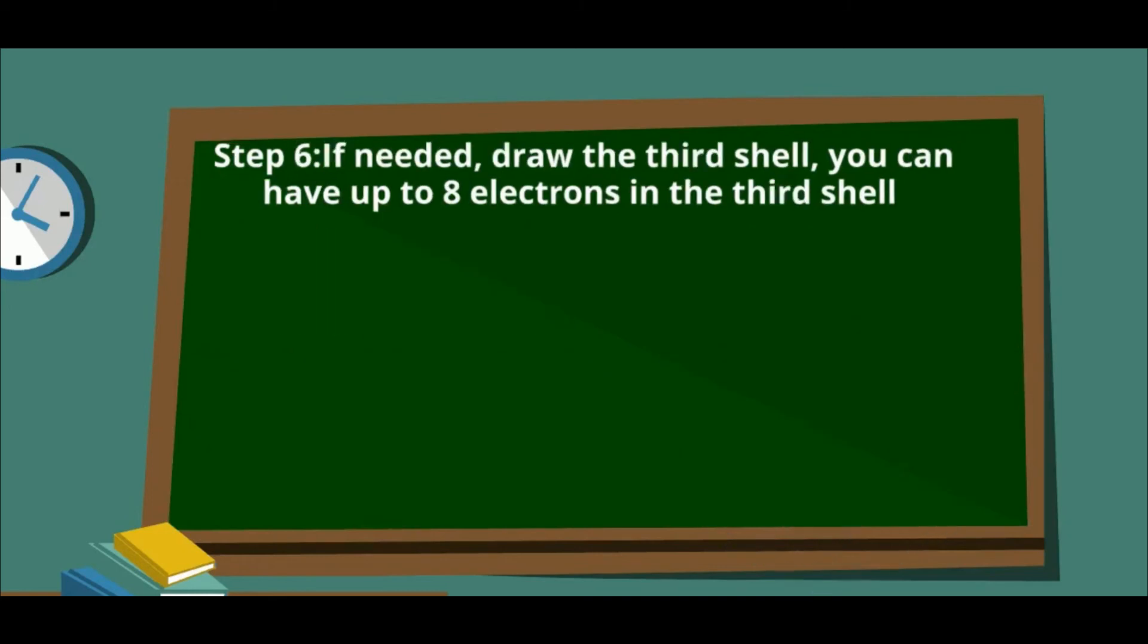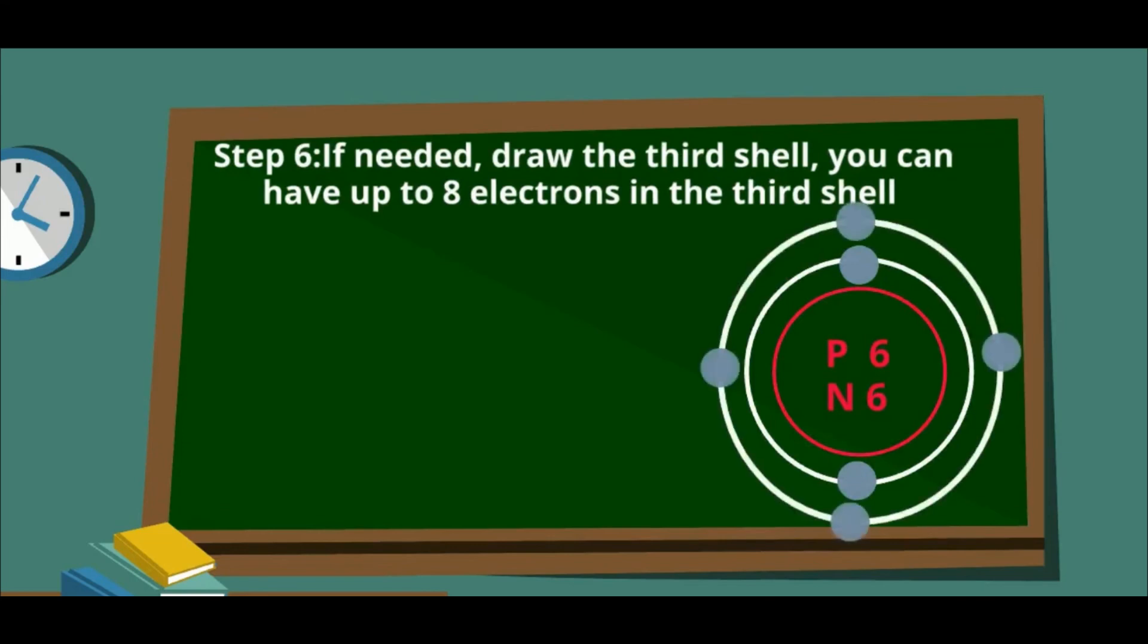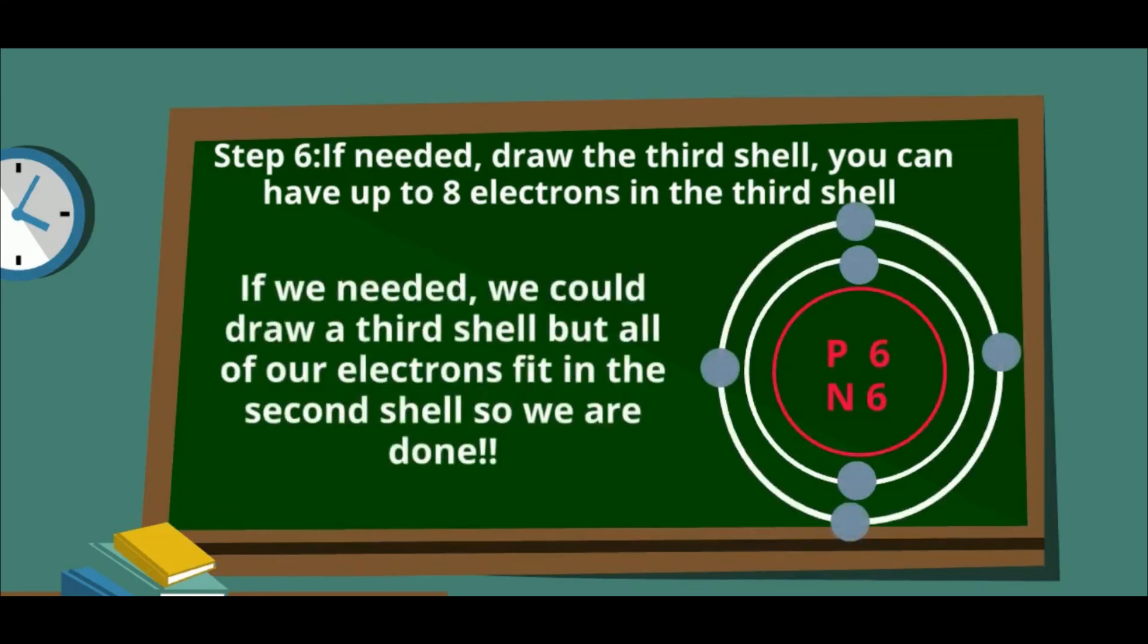Based on the number of electrons, we know that we can have a third shell. However, in our case, all of our six electrons fit in the first two shells. Therefore, we don't need a third shell.